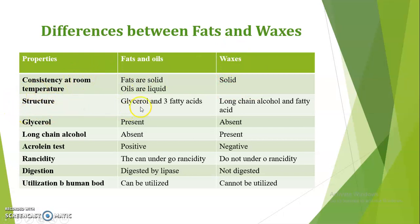Chemically, fats and oils consist of glycerol in addition to three fatty acids. While waxes consist of long chain alcohol and one free fatty acid — only one free fatty acid is present in waxes, whereas fats and oils contain three fatty acids. When fats undergo hydrolysis they are converted into glycerol and three molecules of fatty acids, which may be same, saturated, or unsaturated. When waxes undergo hydrolysis they are converted into long chain alcohol and one mole of fatty acid.